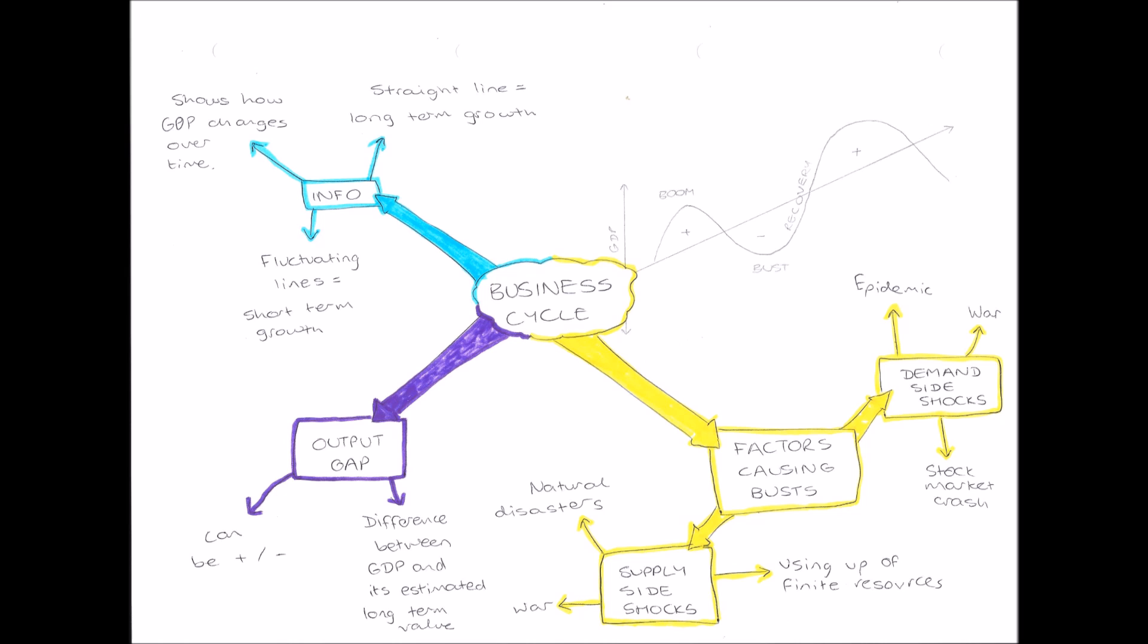Well, in our information section in the top left we are told that the business cycle shows how GDP, how gross domestic product and output, therefore changes over time.